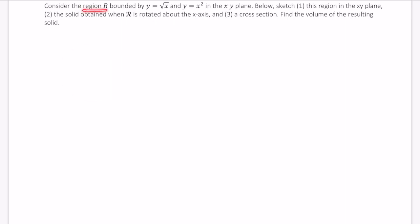Alright, so consider the region R bounded by y equals the square root of x and y equals x squared in the xy plane. We're going to sketch this region in the plane. We're going to sketch the solid obtained when this region is rotated about the x-axis. And we're also going to sketch a cross-section. Then we're going to find the volume of the resulting solid.